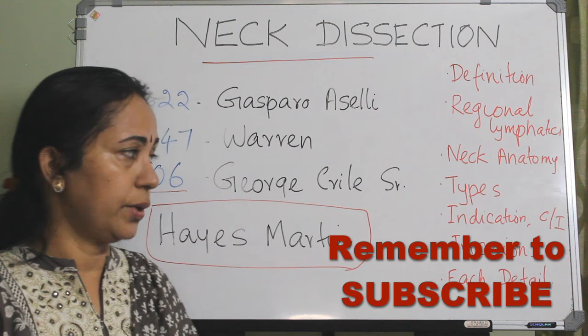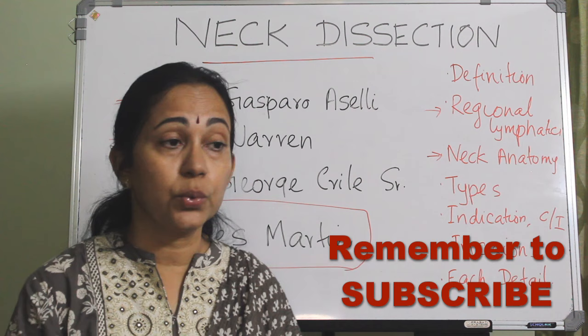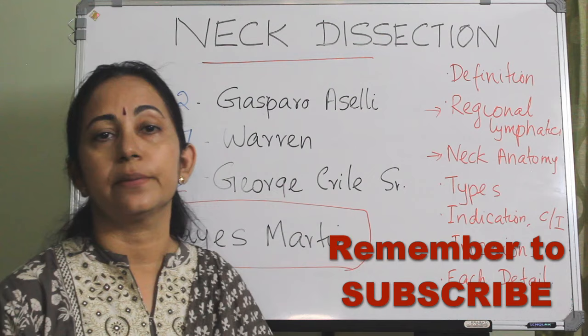Coming to the regional lymphatics and neck anatomy, this was already described in earlier videos. The link is given in the description box. You have to see and understand that, as only then you can proceed to the different types of neck dissection.